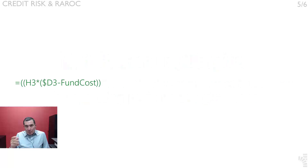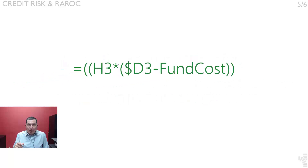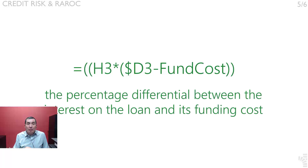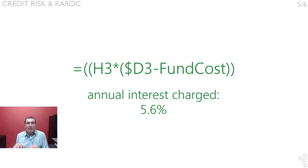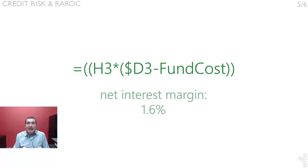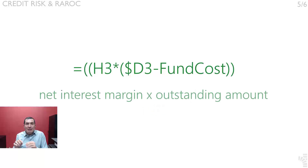H3 times open parenthesis $D3 minus fundacost close parenthesis represents the outstanding amount times net interest margin. The net interest margin is the percentage differential between the interest on the loan minus its funding cost. For example, if the annual interest being charged on the loan is 5.60% and the cost of sourcing funds is 4%, then net interest margin is 1.60%. When multiplied — net interest margin times the outstanding amount — we compute the potential revenue generated by this loan in a year.